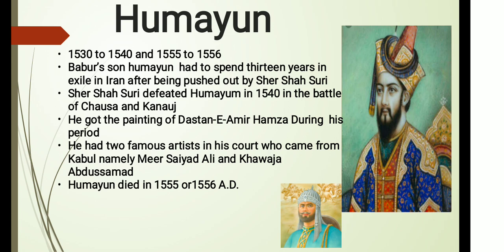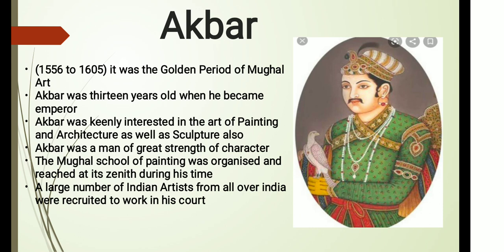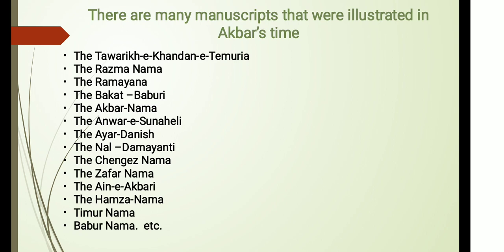Akbar became emperor from 1556 to 1605. It was the golden period of Mughal art. Emperor Akbar was keenly interested in the art of painting, architecture, and sculpture. He was a man of great strength of character and had a broad vision. The Mughal School of Painting was organized and reached its zenith during this time. A large number of Indian artists from across India were recruited to work in his court. Many manuscripts were illustrated in Akbar's time, including the Tarikh-e-Khandan-e-Timuriya and the Razmnama (Mahabharata).